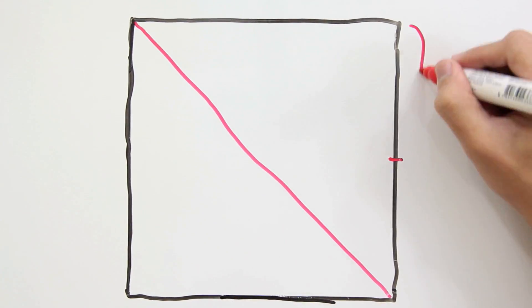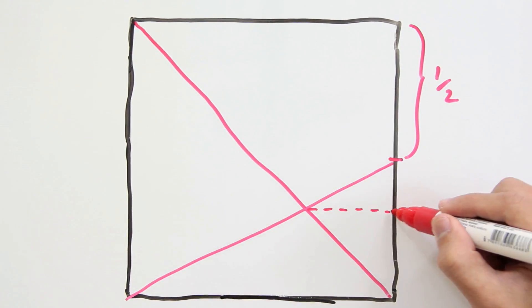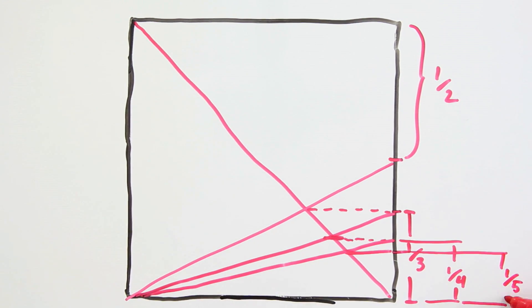And actually, you can keep doing this to find other divisions. Using the half mark, you can find one-third, using the one-third mark, you can find one-fourth, and using this mark, you can find one-fifth, and so on.